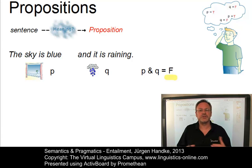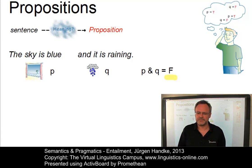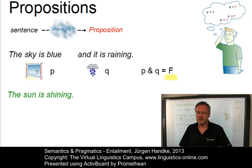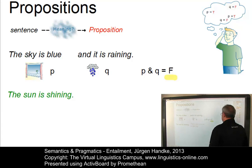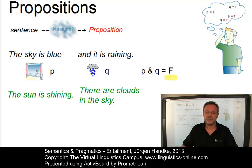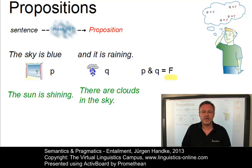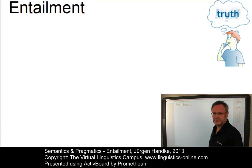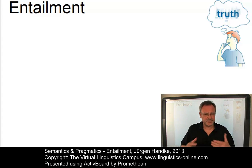The interesting thing is that we can now draw logical inferences from single propositions which are true. Assuming that the sky is blue, one such inference is that the sun is shining. And from 'it is raining' — from Q — we can infer that there is at least one cloud in the sky, since according to our knowledge of the world, one prerequisite for rain is that there are clouds in the sky. These logical inferences are referred to as entailment.